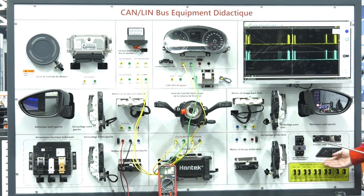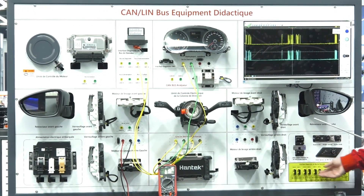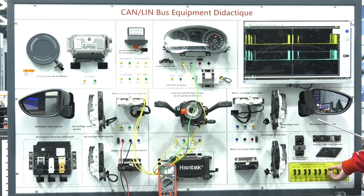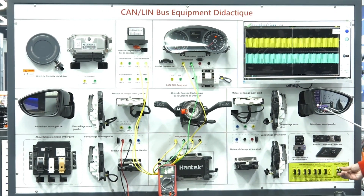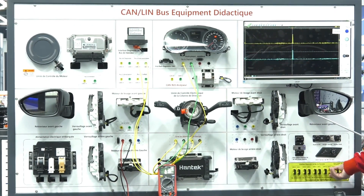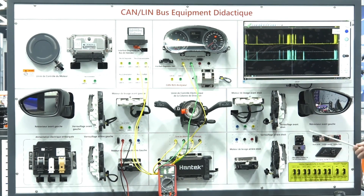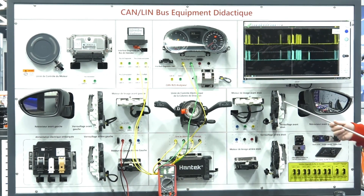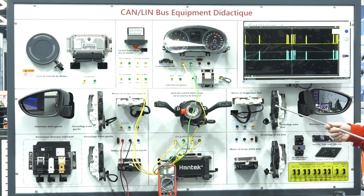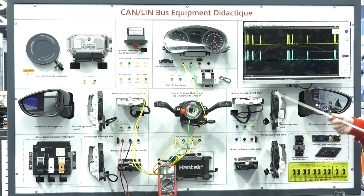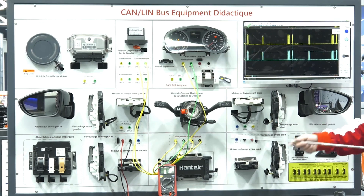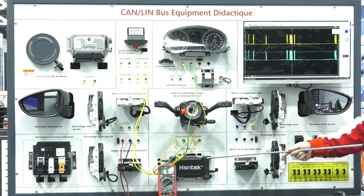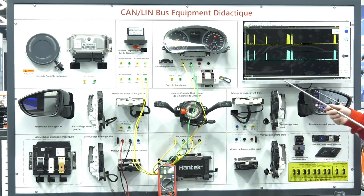For all the data, there is an integrated oscilloscope located below the integrated computer. The oscilloscope is used to read information related to the CAN protocol.